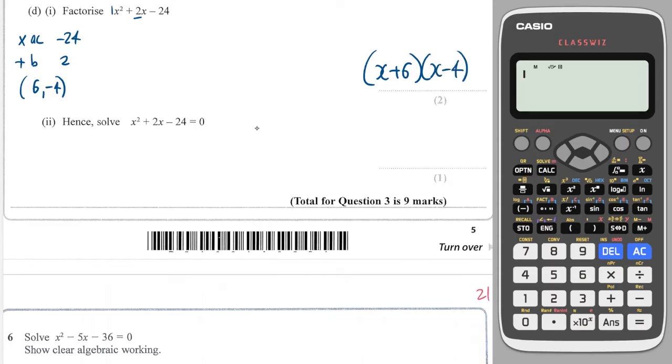And now to solve, once it's in factorised form, one of these two brackets must equal 0 in order for the whole quadratic to equal 0. So either we have x plus 6 equals 0, or we have x minus 4 equals 0. In this case, x will equal minus 6, and in this case, x will equal 4.